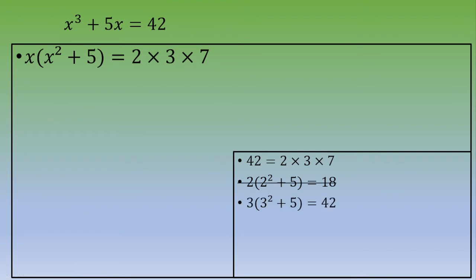Let's try with 3. 3 times 3 squared plus 5, this is 9 plus 5, this is 14, and 3 times 14 equals 42. So 3 is verifying this equation.